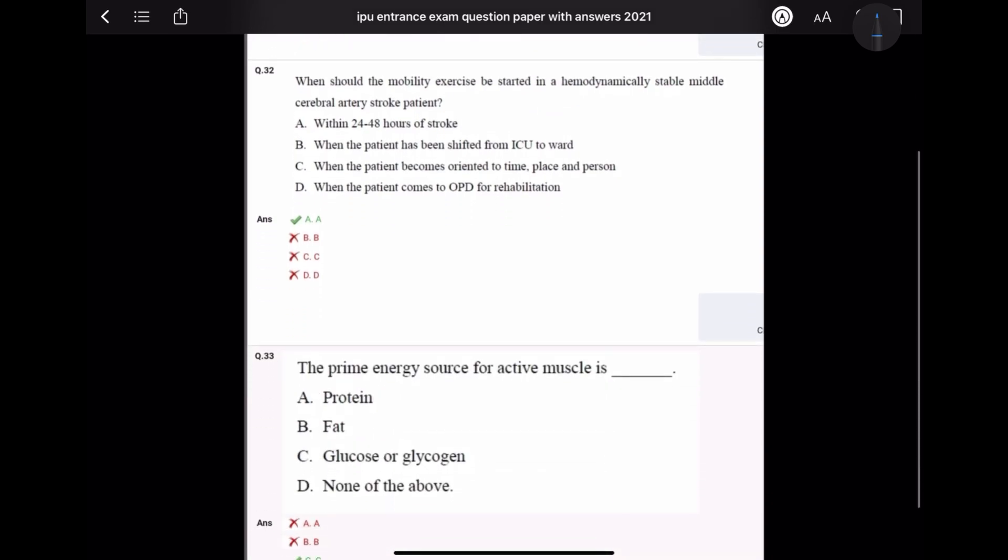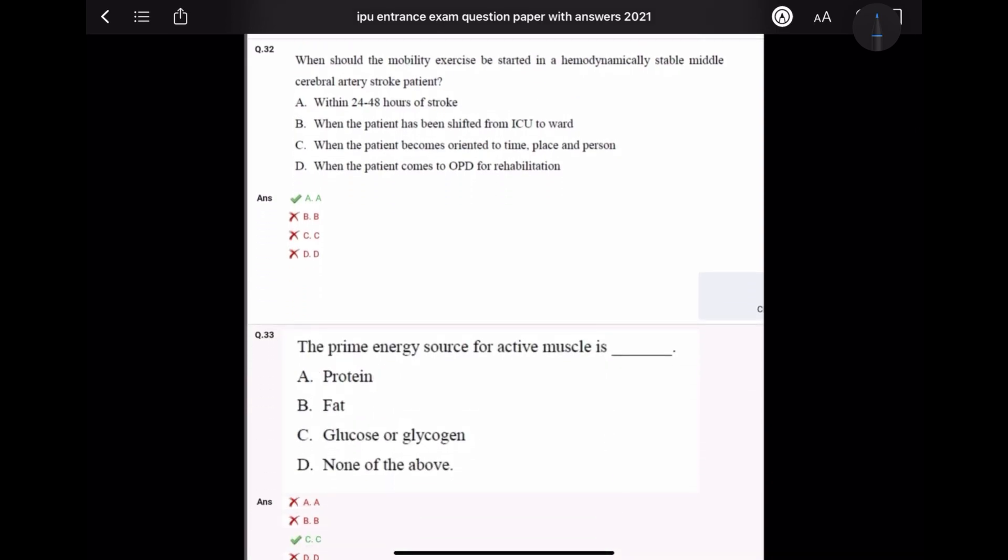Next question: When should the mobility exercise be started in a hemodynamically stable middle cerebral artery stroke patient? Middle cerebral artery means upper limb is more affected than lower limb and face. Within 24 to 48 hours of stroke, mobility exercises start. So answer is A.